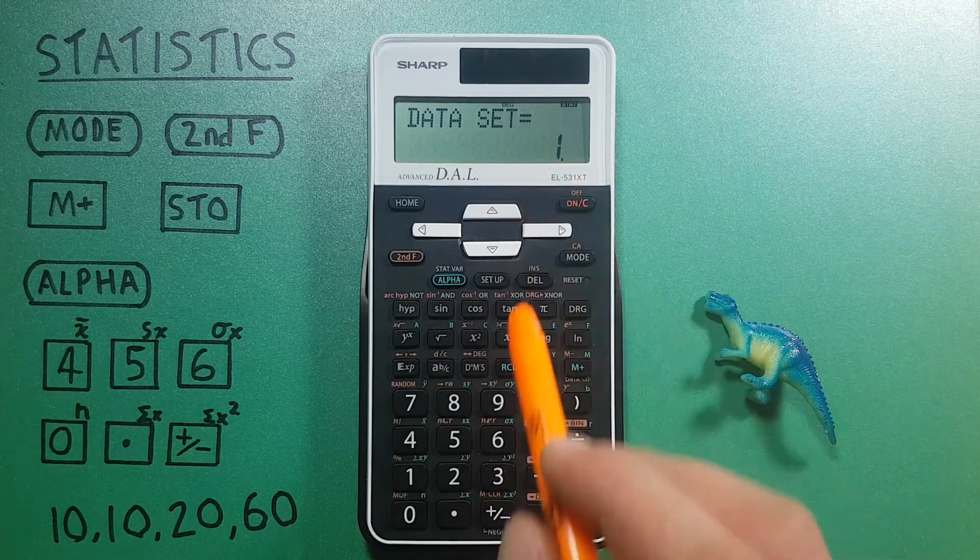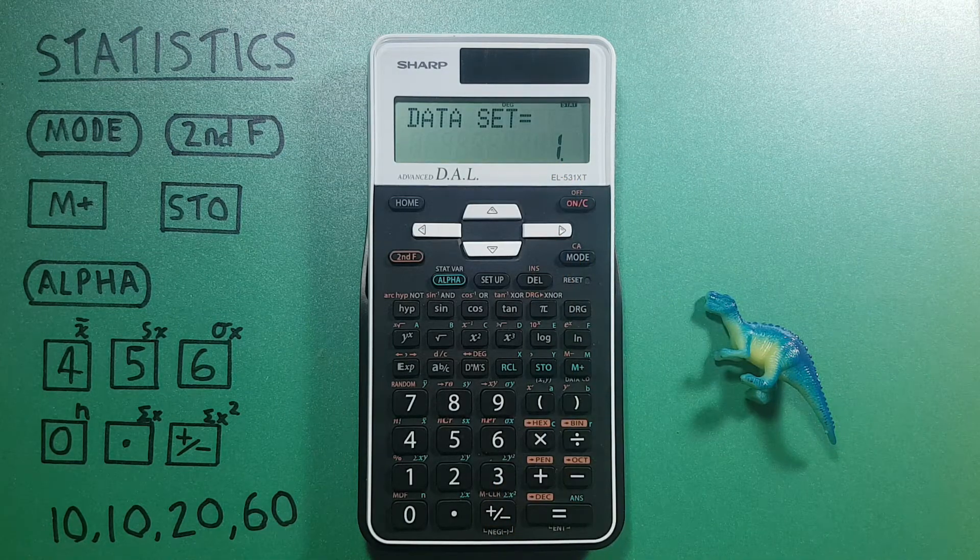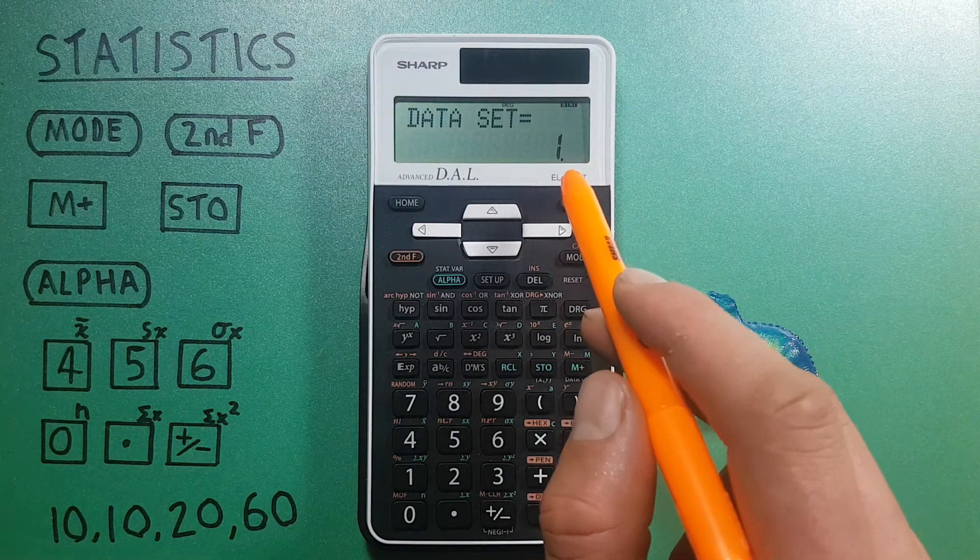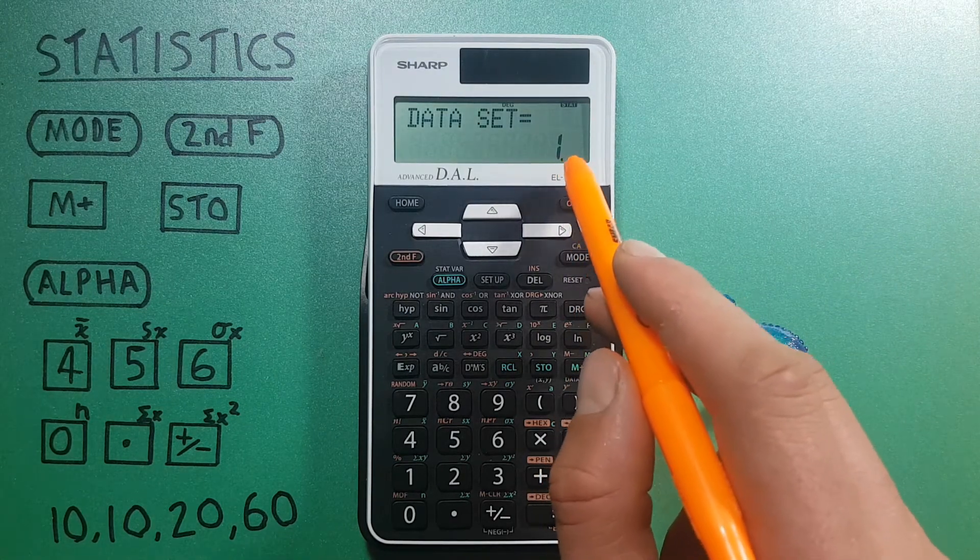Now this says one which means we have one variable in the data set, but don't let that trick you. Since we entered it as a frequency of two, there will be two digits in there.